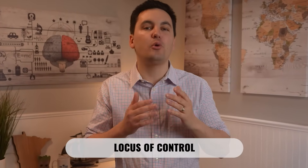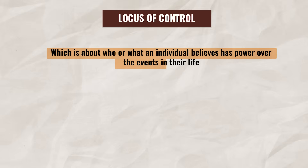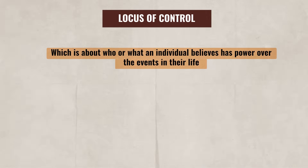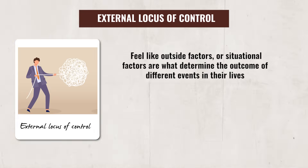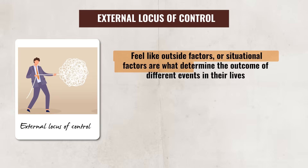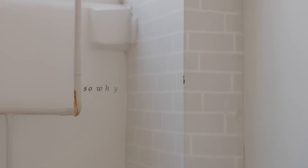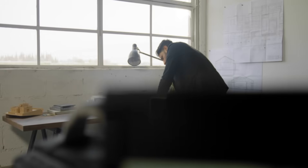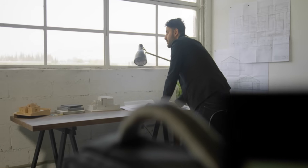Another factor that can impact a person's attitudes and explanations is their locus of control, which is about who or what an individual believes has power over the events in their life. Locus of control can be broken into two sides: external and internal. Individuals with an external locus of control feel like outside or situational factors determine the outcome of different events in their lives. This can cause an individual to assume their actions do not make a difference, which could lead them to develop learned helplessness.